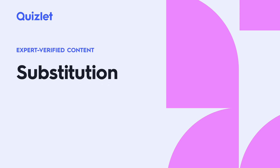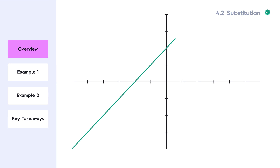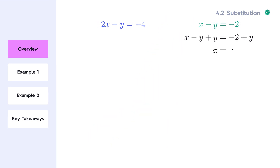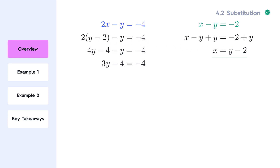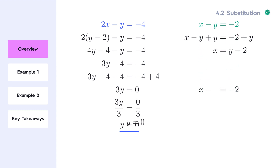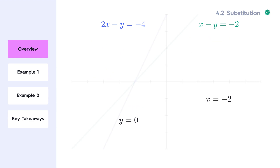Today, we're going to learn about solving systems of two linear equations using a method called substitution. Substitution is a technique for solving systems of equations where one equation is solved for one variable, and then this expression is substituted into the other equation. This method helps us find the exact values of the variables quickly and easily. By the end of this video, you'll be comfortable solving systems of equations by substitution, step by step. Let's get started.